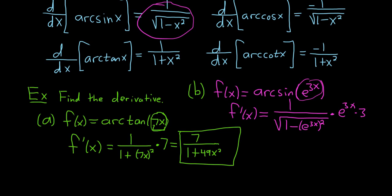Again, the derivative of arcsine is 1 over the square root of 1 minus x². Here this is our x. Then we multiply by the derivative of the inside. But the inside function is e^(3x), so its derivative is e^(3x) times the derivative of 3x, which is 3. It's like a double chain rule.